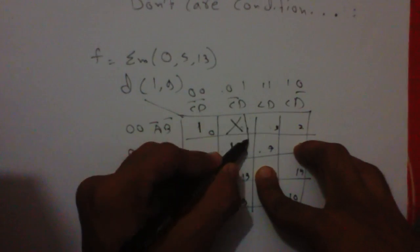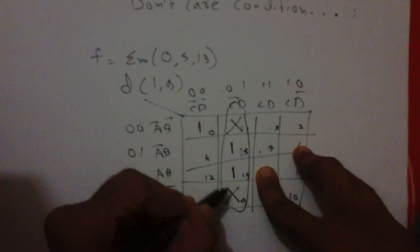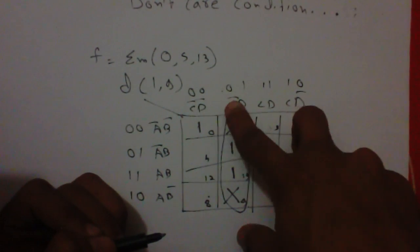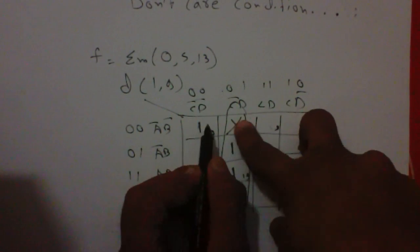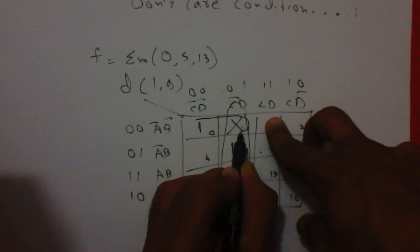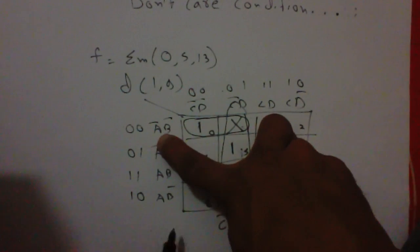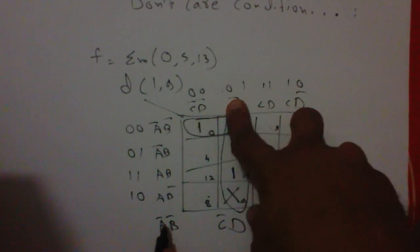So we can create this group, we can include don't care conditions in this group. So the expression of this group will be C dash D. And we can also create this pair, so expression of this will be A bar B bar and common is C bar.